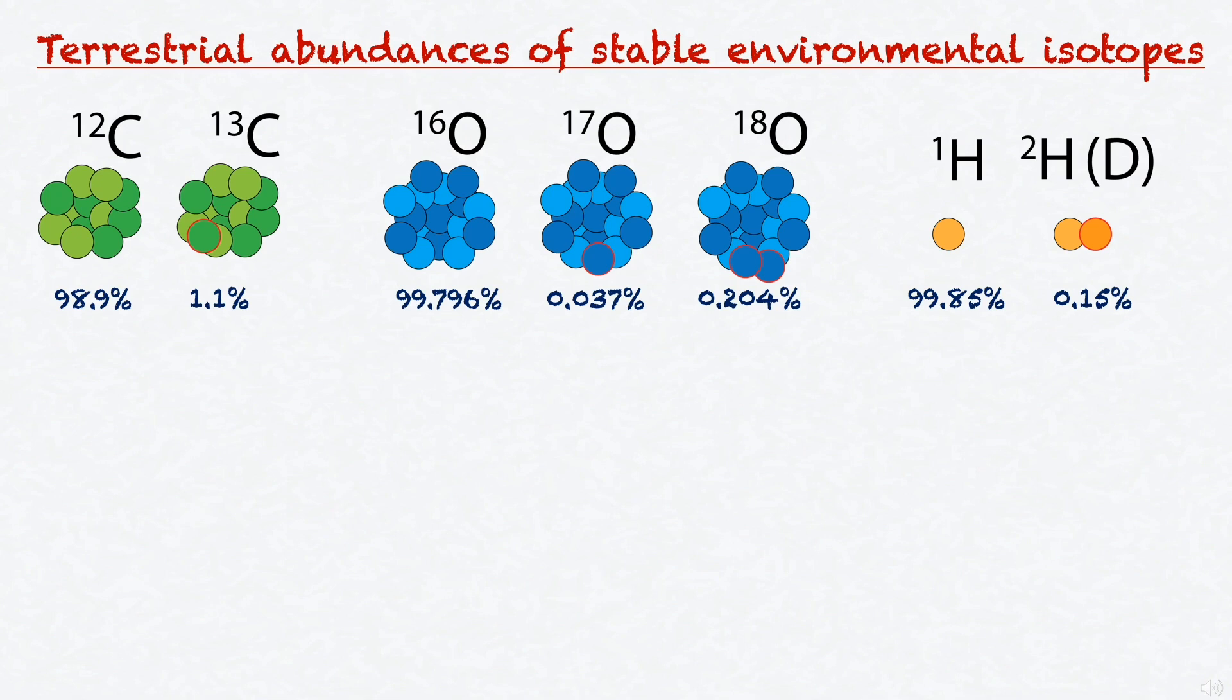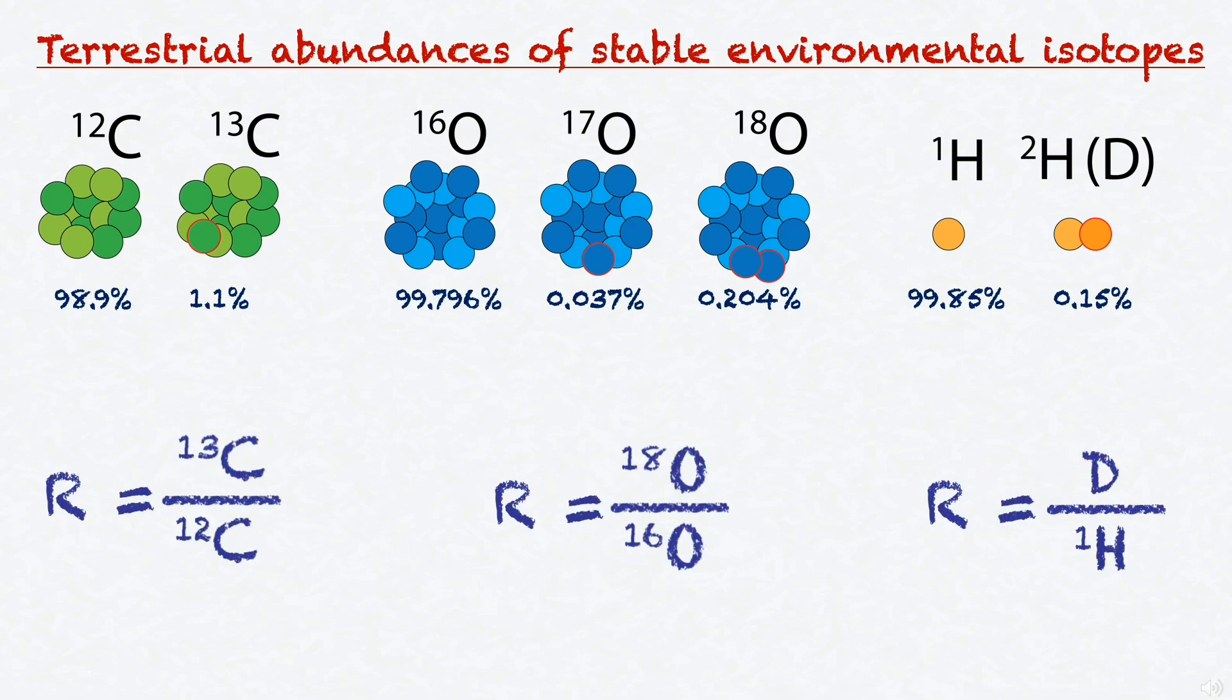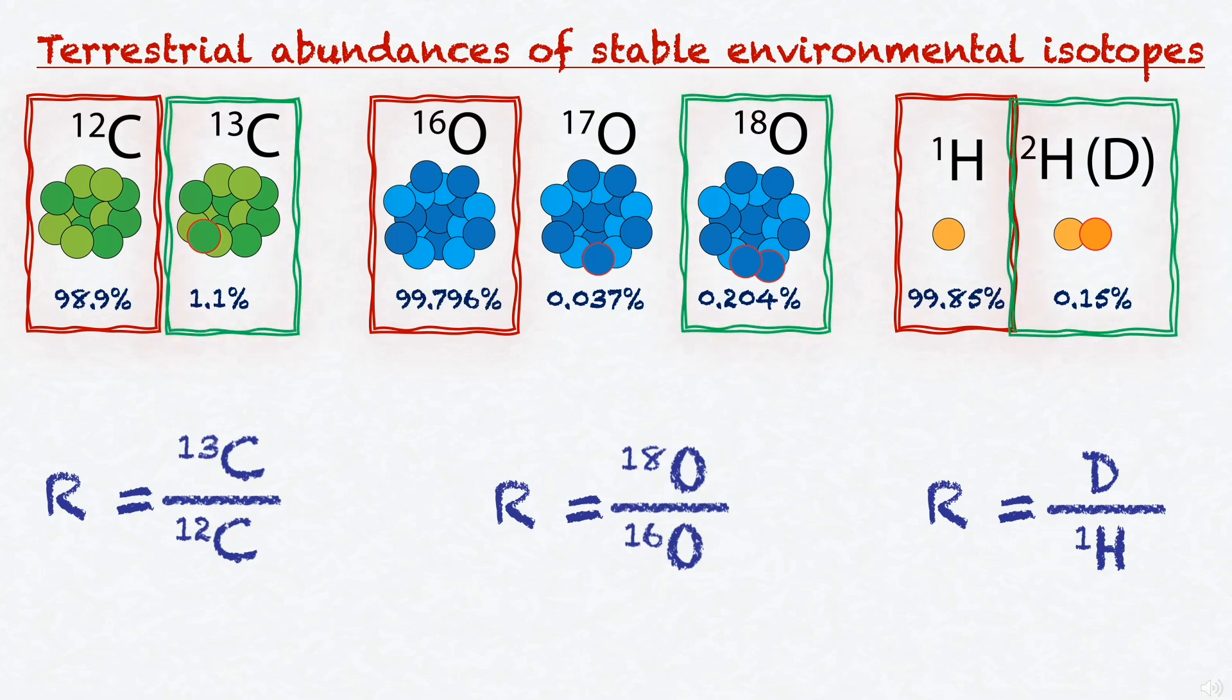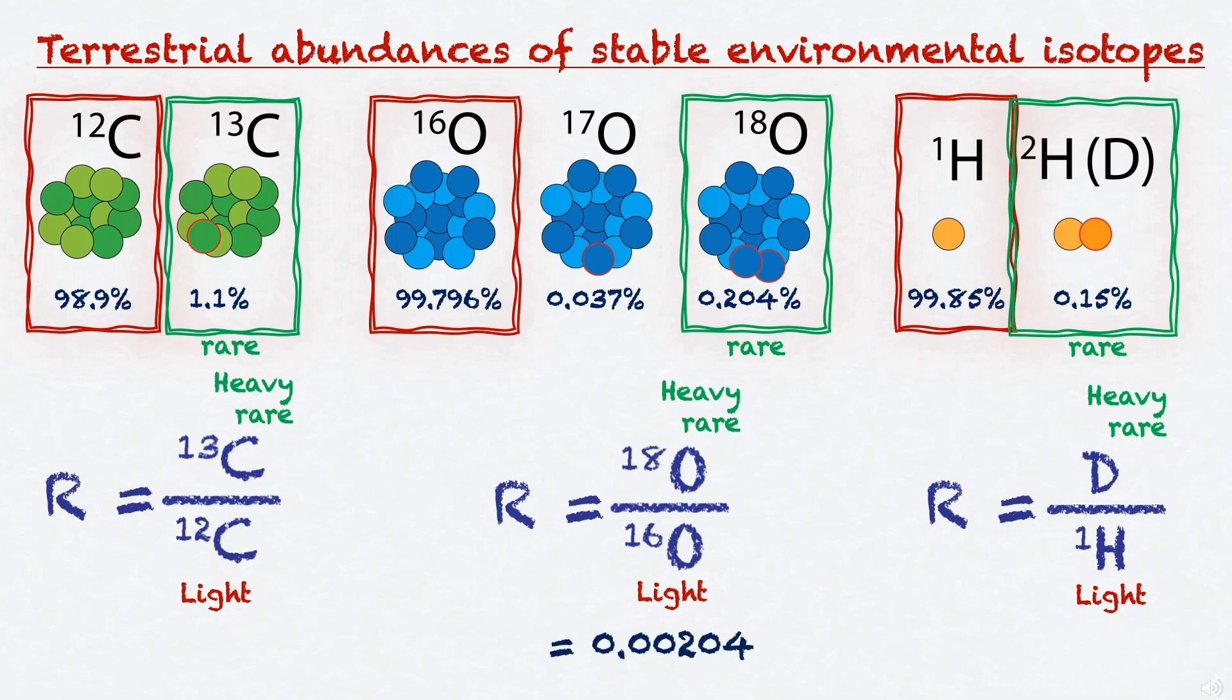Stable environmental isotopes are measured as the ratio between the two most abundant isotopes of a given element. You may have noticed that the most abundant one is always the lighter one, and the second most abundant is actually a heavier one with a very low abundance, and this is why we refer to them as the rare isotope. We are always looking at the difference in abundance between the rare or heavier isotope and the most abundant lighter isotope. So, based on natural abundances, the oxygen-18 to oxygen-16 ratio is 0.00204, the deuterium-to-hydrogen ratio is 0.015, and the carbon-13 to carbon-12 ratio is 1.11.